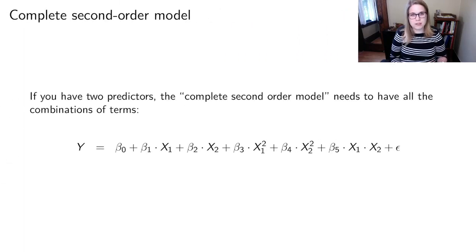There's such a thing as a complete second-order model, which is if you have two predictors, so you've got an x1 and an x2, and you're going to do a complete second-order model, it needs to have all the combination of terms. So it's going to have a beta 0, just an intercept. Then it'll have the individual betas on just x1 and x2. It will have both the squared terms, and then it will have a term where you multiply x1 and x2 and have the interaction between those two variables.